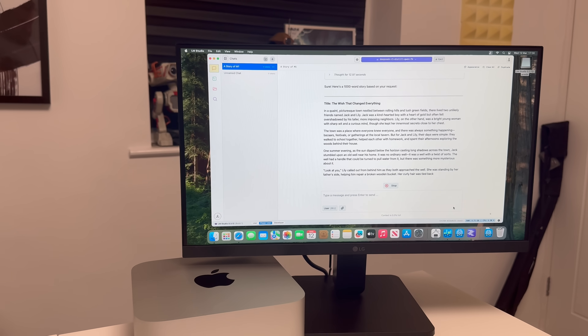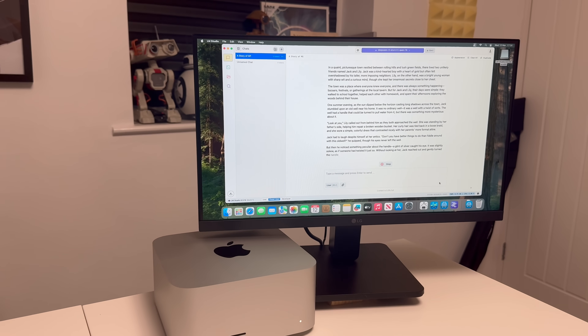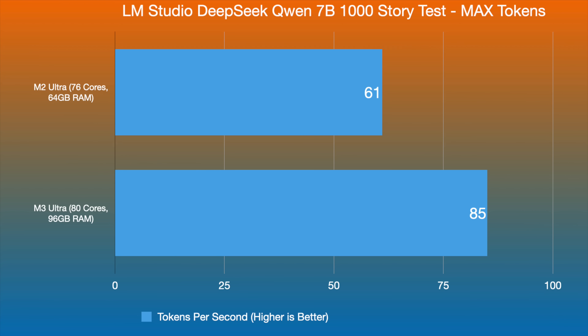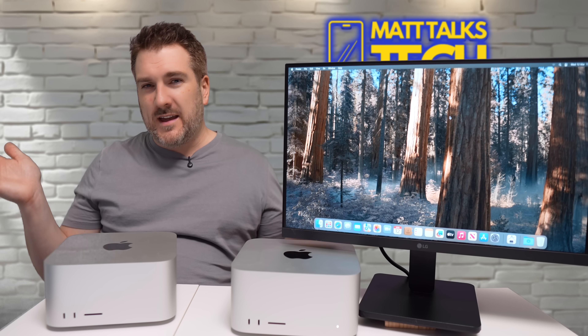I then ran the same test again set to the maximum number of tokens to try to utilize all the RAM, but it didn't fully do so. The results were only slightly different: the M2 Ultra produced 61 tokens per second and the M3 Ultra produced 85 tokens per second for the 1,000-word story test.